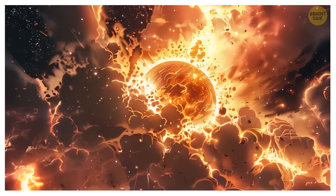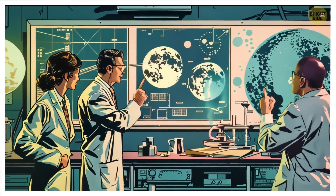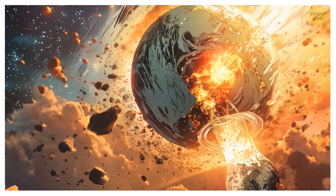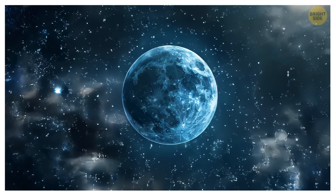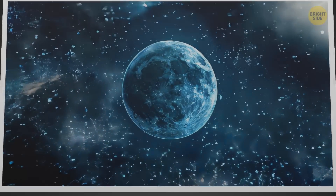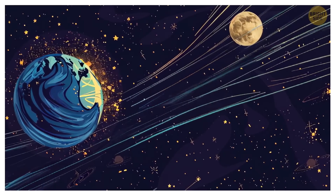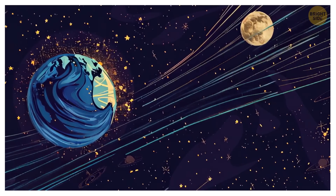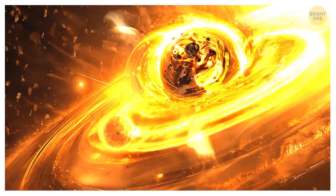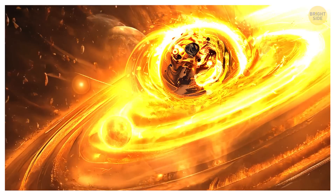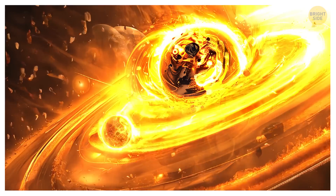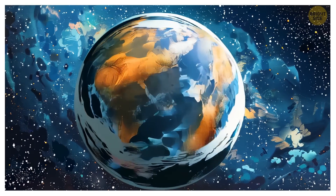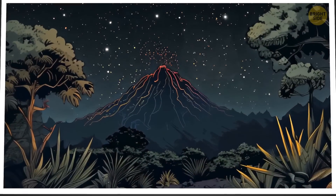Our Moon was the result of impact debris — a combination of hot gas and molten rock. There are some theories of how the Moon formed though. One claims it broke off from the Earth; another says the Moon formed somewhere else in our solar system and at some point got so close to Earth that it ended up captured by its gravity. Fans of a third theory believe the Moon and the Earth formed at the same time from the same protoplanetary disk.